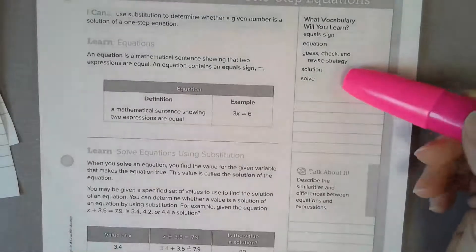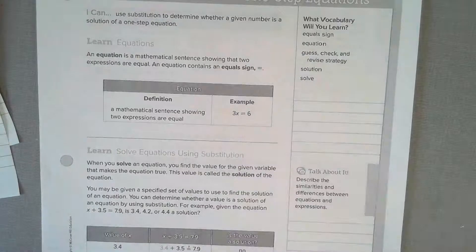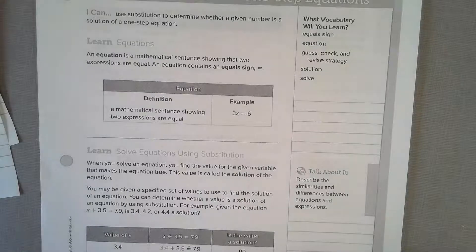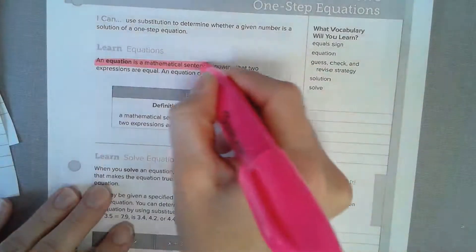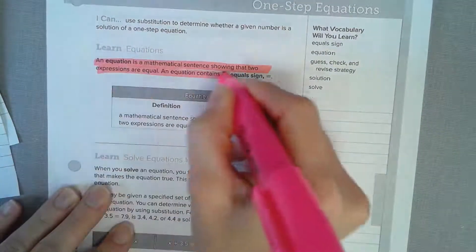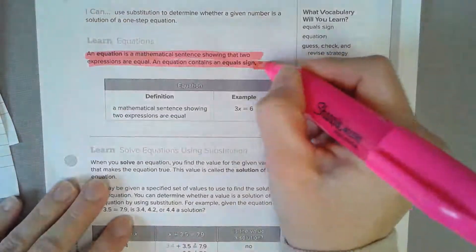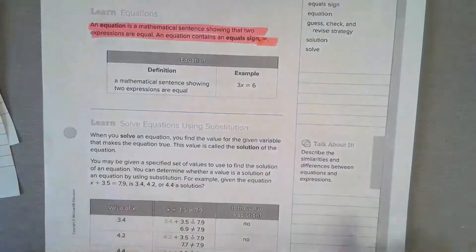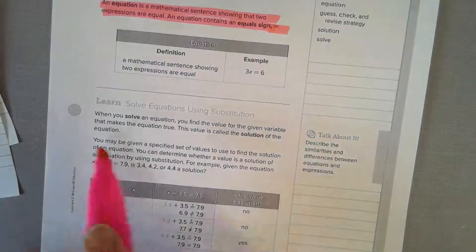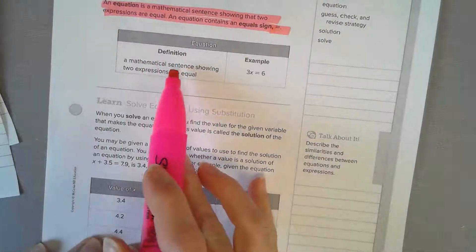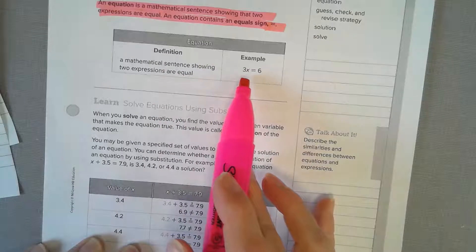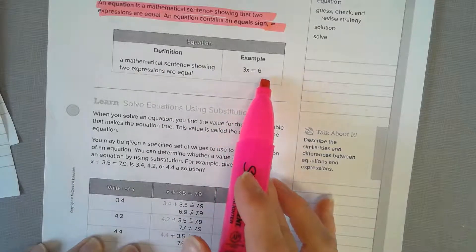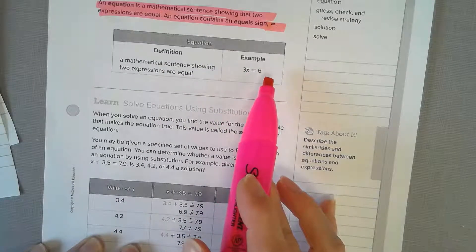An equation is a mathematical sentence showing that two expressions are equal — it will have an equal sign. Let's highlight this. We know it's an equation because it has an equal sign. Here's the definition and here's an example: 3x = 6. We know these are equal to each other because of the equal sign.